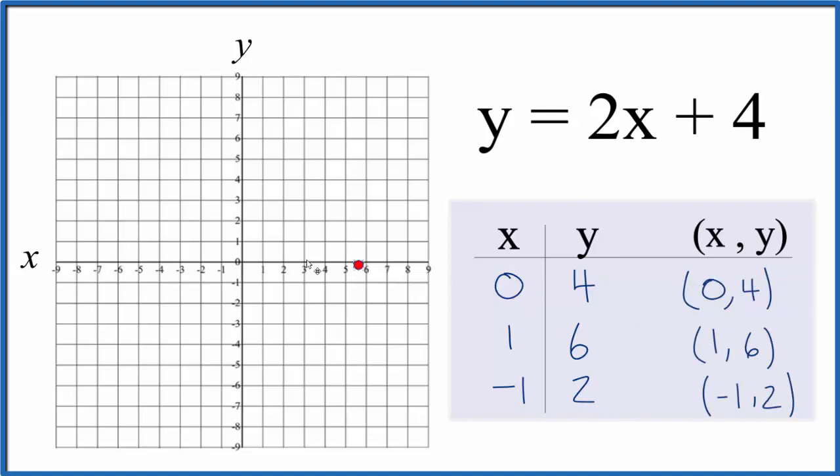So we find 0 here on the x-axis, and we go up 1, 2, 3, 4. That's our first point. We have 1, 6, so we go over 1 on the x and up to 6 right there.